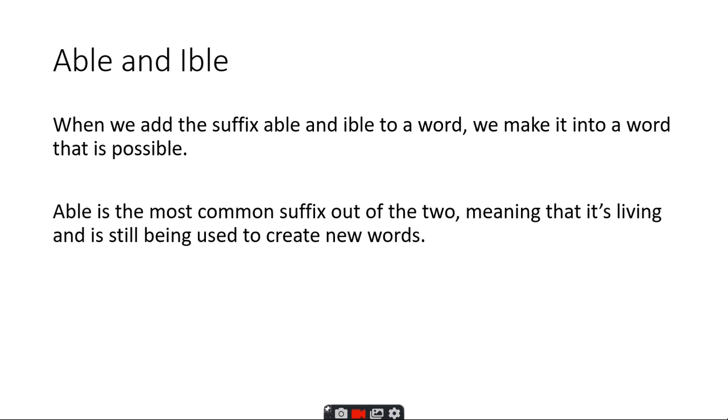When we add the suffix -able and -ible to a word, we make it a word that's possible. Able is the most common suffix out of the two, and that usually means that something is living, it's still being used, it's something that's used to create words.